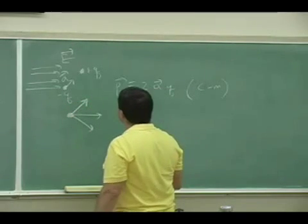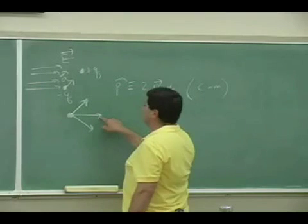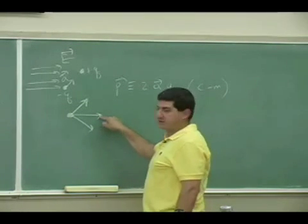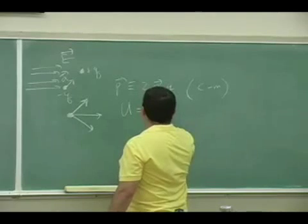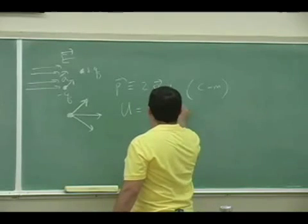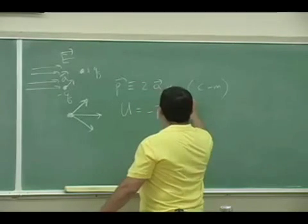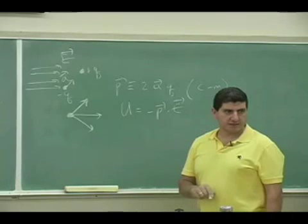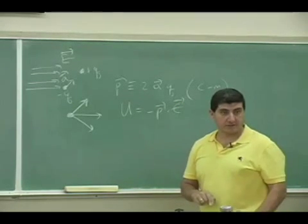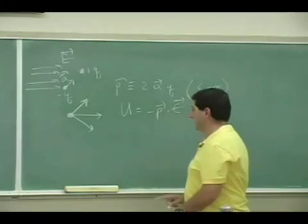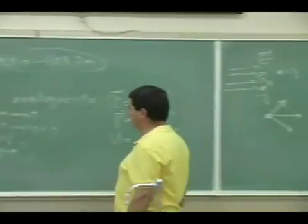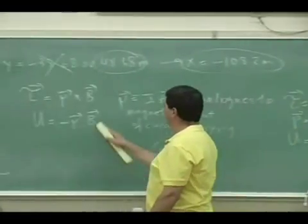The lowest potential energy is when the dipole is lined up with the field. U equals negative p dot E — that's the most negative, lowest potential energy it can have. The exact same thing is true with the magnetic case.